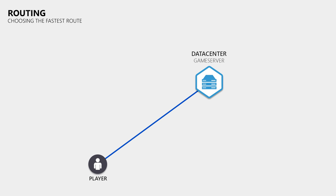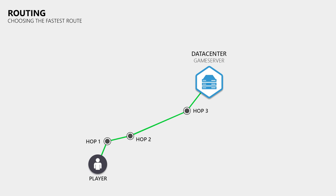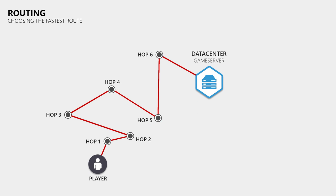However, you cannot determine your ping by drawing a straight line on a map between your home and the server location, because copper and fiber optic cables take a very different route and the data has to pass through multiple routers before it reaches the server. When a router has to forward data it tries to choose the best route, but it can happen that a router chooses a bad route, or has to choose a worse one when the better route is down, or is configured to choose the cheapest route. Such detours can result in much higher pings and an increased risk of packet loss. So when you suddenly notice a much higher ping than usual on the same server, this could be caused by routing, and you may need to call your internet service provider so they can check their routing tables.